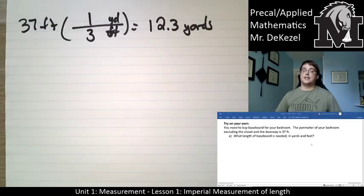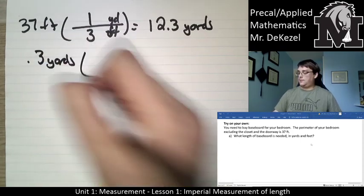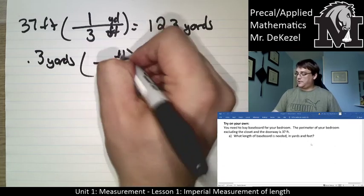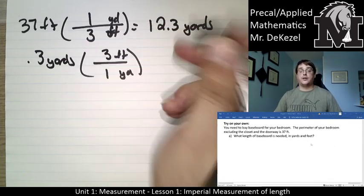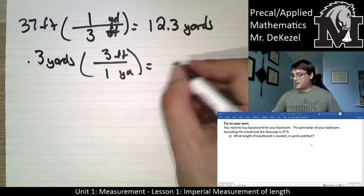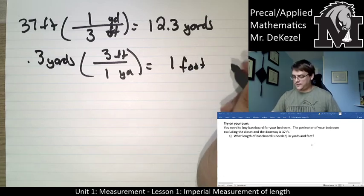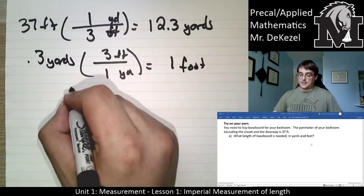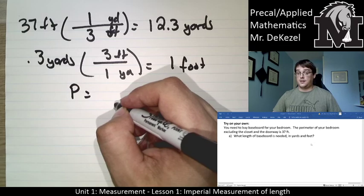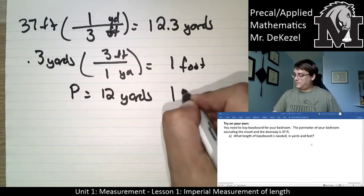We take 0.3 yards and multiply: yards on the bottom, feet on the top. There are 3 feet in one yard — the opposite of what we had up top. 0.3 times 3 is approximately 1 foot — a little bit less, but we'll go with 1 foot. So the perimeter we need in yards and feet is 12 yards, 1 foot.